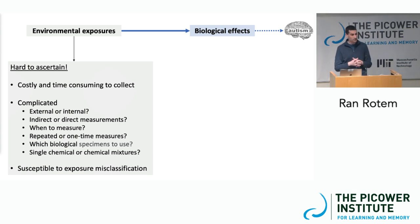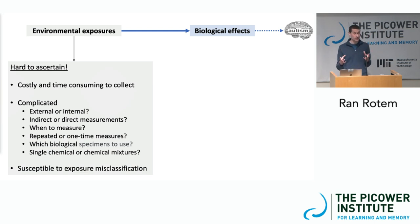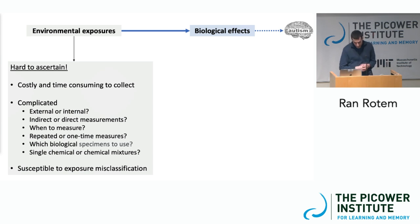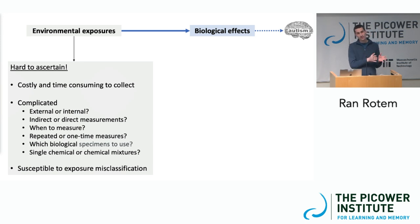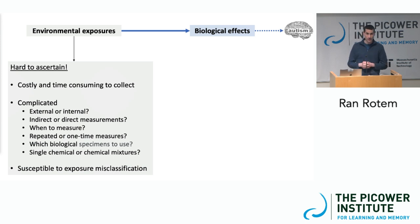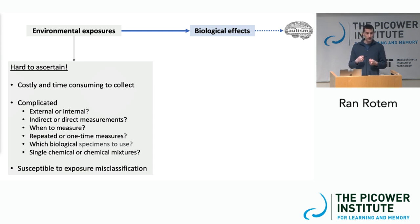Directly measuring environmental exposures is really hard and expensive. There are many difficult questions to answer: whether to measure by self-report or actual measurements; whether to measure exposures externally — like chemical concentration in tap water — or what actually enters the body; the frequency of measurements during pregnancy; and whether to focus on one chemical at a time versus a mixture approach. All of this means that exposure misclassification is actually quite common when we try to assess environmental exposures directly.